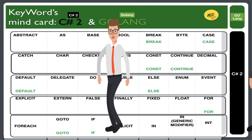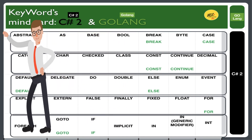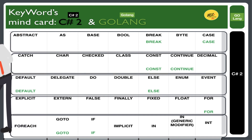Well done. Hi guys. Please listen to my British accent. Abstract. As. Base. Bool. Break. Byte. Case. Catch. Char. Checked. Class. Constant. Continue. Decimal. Default. Delegate. Do. Double. Else. Enum. Event. Explicit. Extern. False. Finally. Fixed. Float. For. ForEach. Goto. If. Implicit. In — generic modifier. Int.